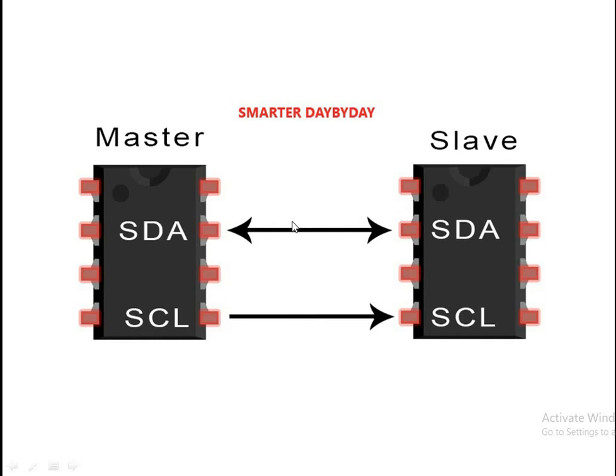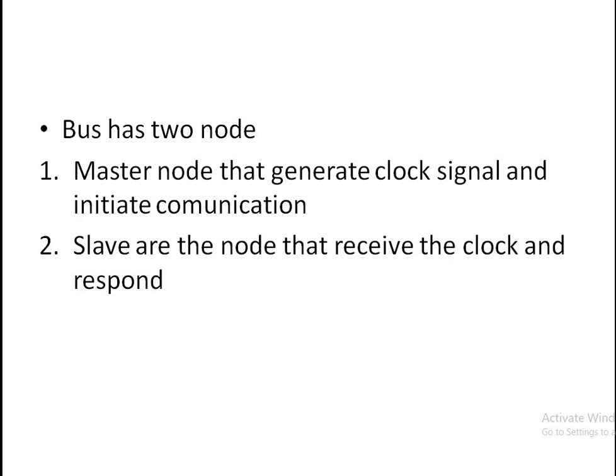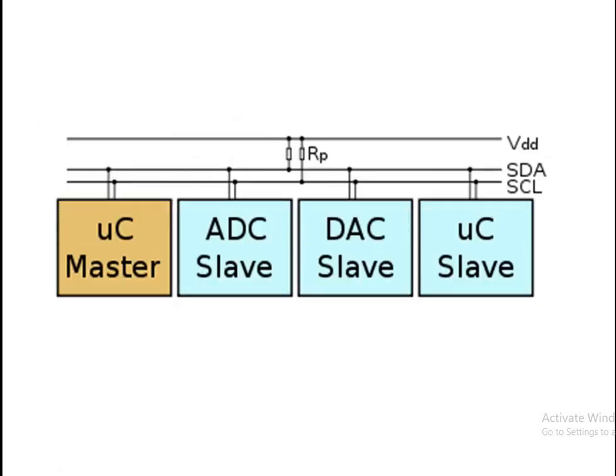We can connect multiple slaves to only one master, and we can connect multiple masters also. As you can see here, one master and three slaves are connected to it: one is the ADC slave, one is the DAC, and one is the microcontroller slave. These are connected to the master through the I2C bus, which has the SDA line and the SCL line. There is VDD which supplies the voltage to these master and slaves, and it has the pull-up resistor.